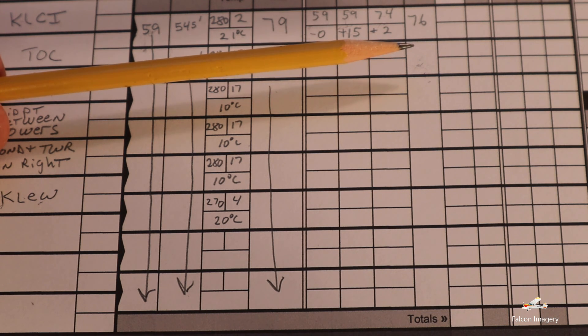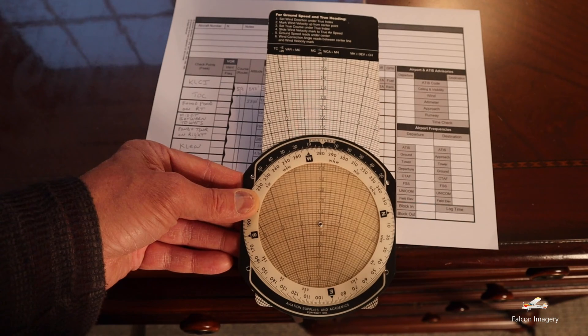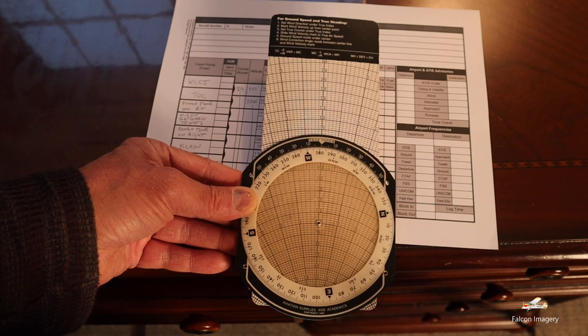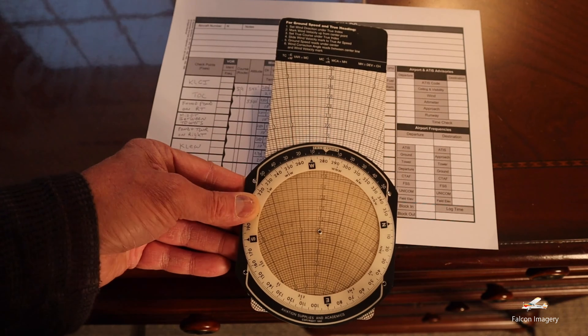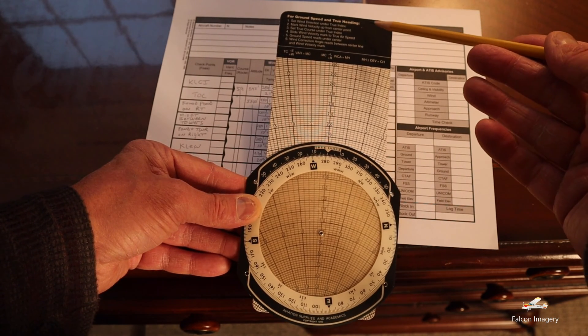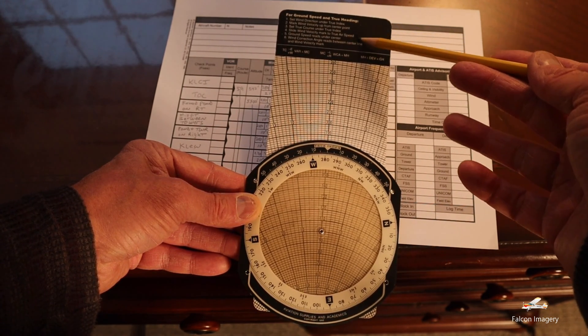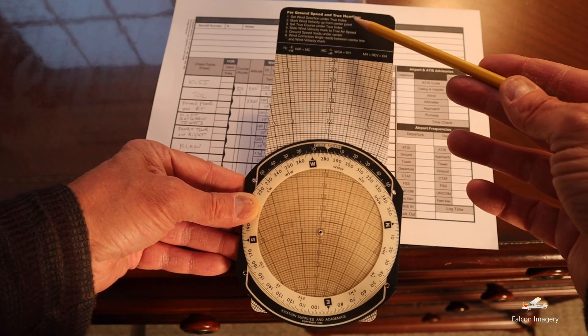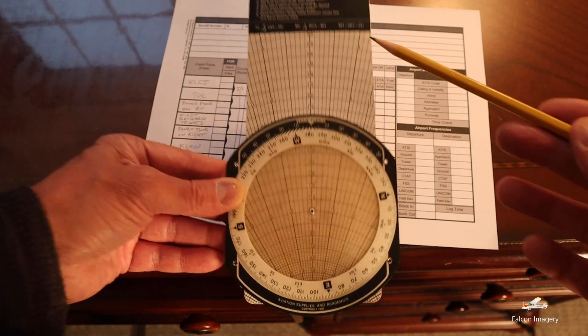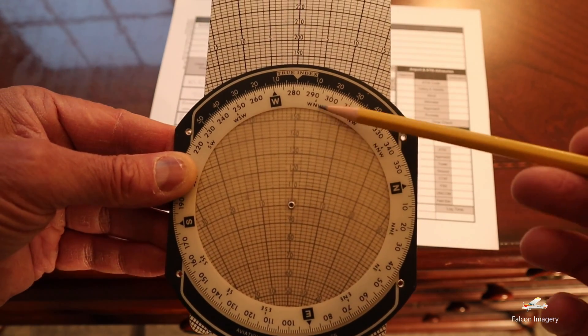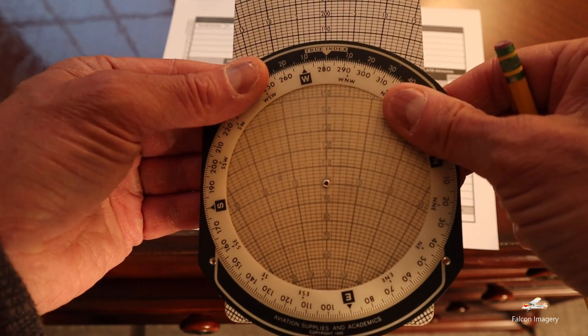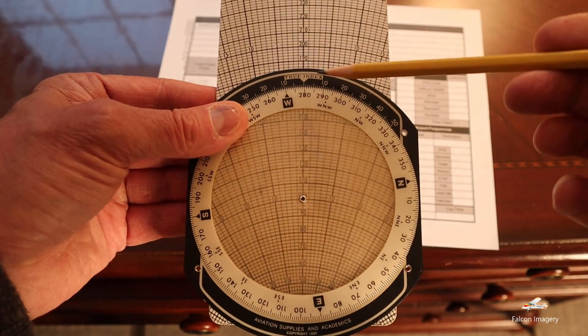So we're going to use our E6B whiz wheel to first determine the wind correction that we need to deal with. So again, what we're going to do is determine the wind correction error that we have to factor in for this trip at cruise altitude at 5,500. So all we have to do is use E6B whiz wheel instructions that are very well spelled out right up here at the top. The first thing it asks us to do is set the wind direction under the true index. I have already gone ahead and I've set the wind direction which is 280 underneath the true index.